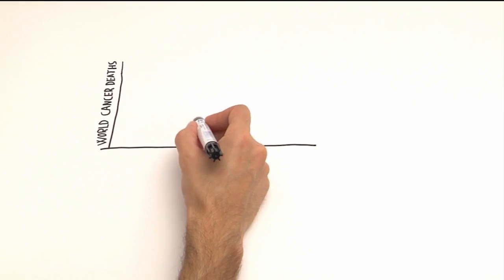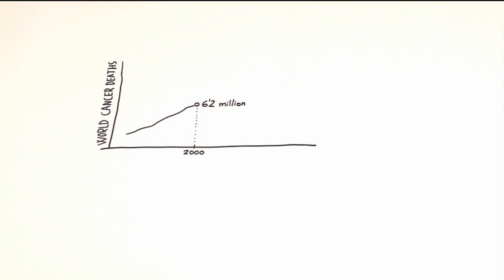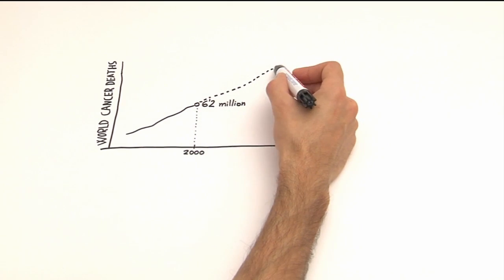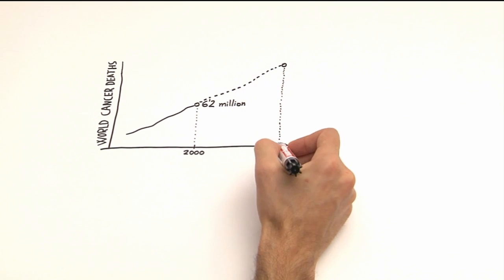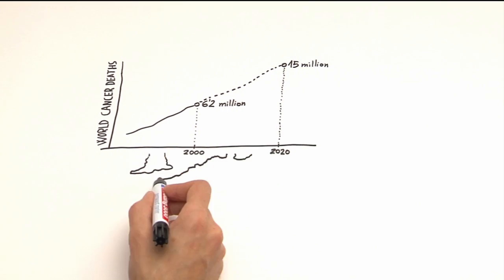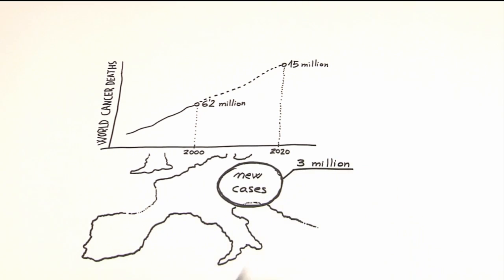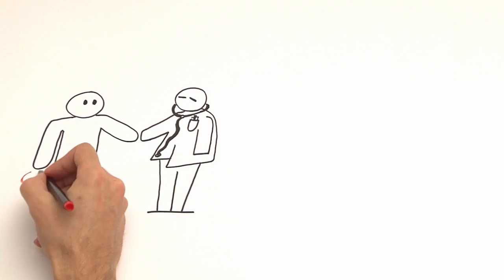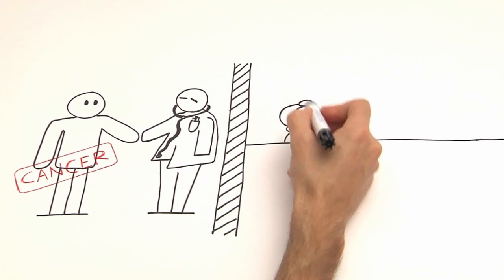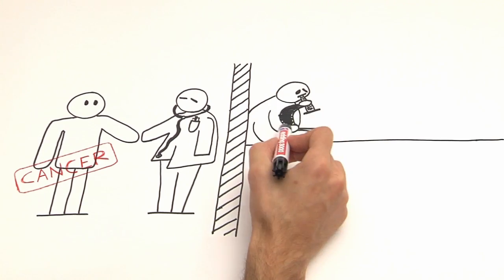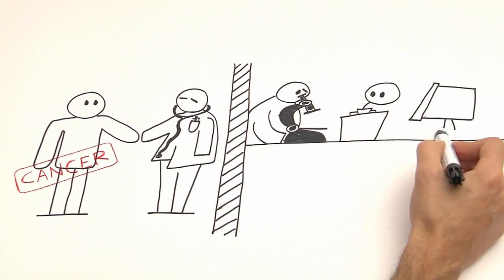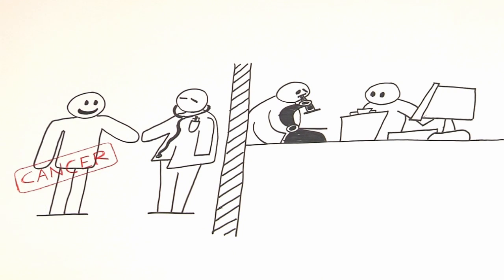In 2000, there were more than 6.2 million cancer-related deaths in the world. The World Health Organization forecasts that it will rise to 15 million by 2020. In Europe, there are 3 million new patients each year and 1.7 million deaths. Survival rates and cure rates are increasing due to advances in the study of different cancers and the implementation of innovative treatments that improve things for patients.